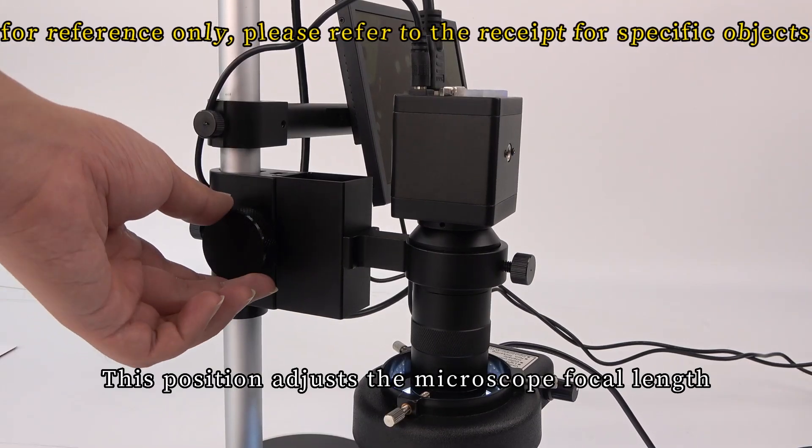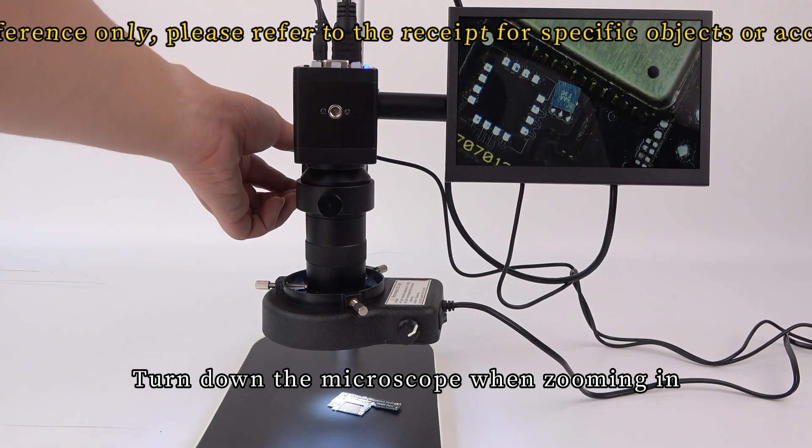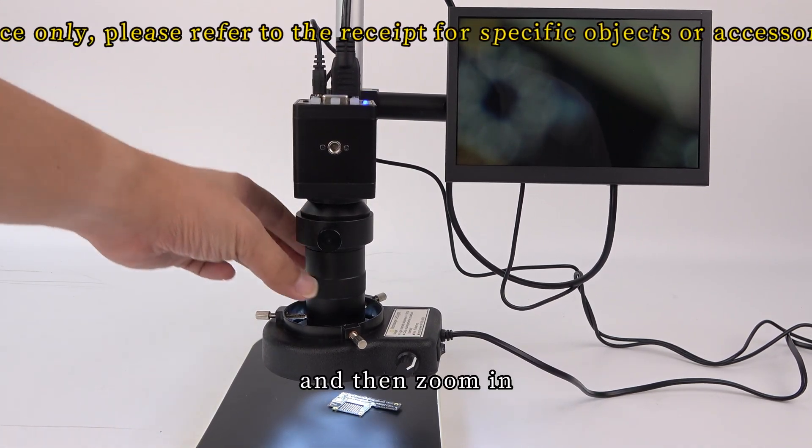This position adjusts the microscope focal length. Turn down the microscope when zooming in, and then zoom in.